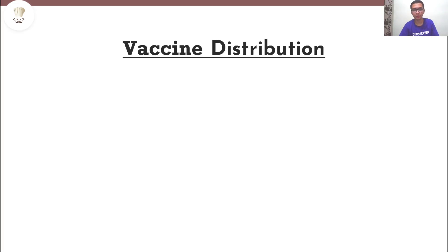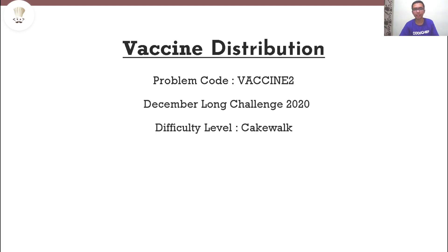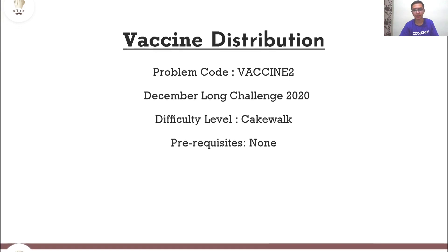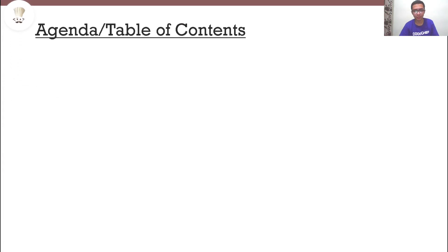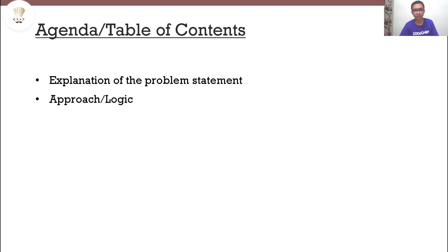In this video, we are going to solve Vaccine Distribution, which appeared in the December Long Challenge. The difficulty level is cakewalk and the prerequisites are none. This video is divided into three parts: an explanation of the problem statement, the approach to solve the problem, and a C++ code to demonstrate the approach.